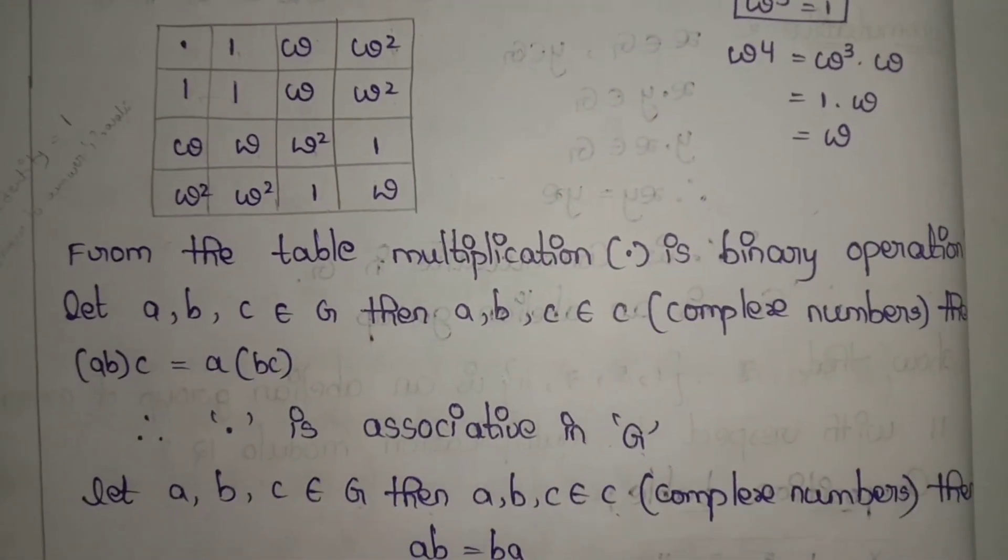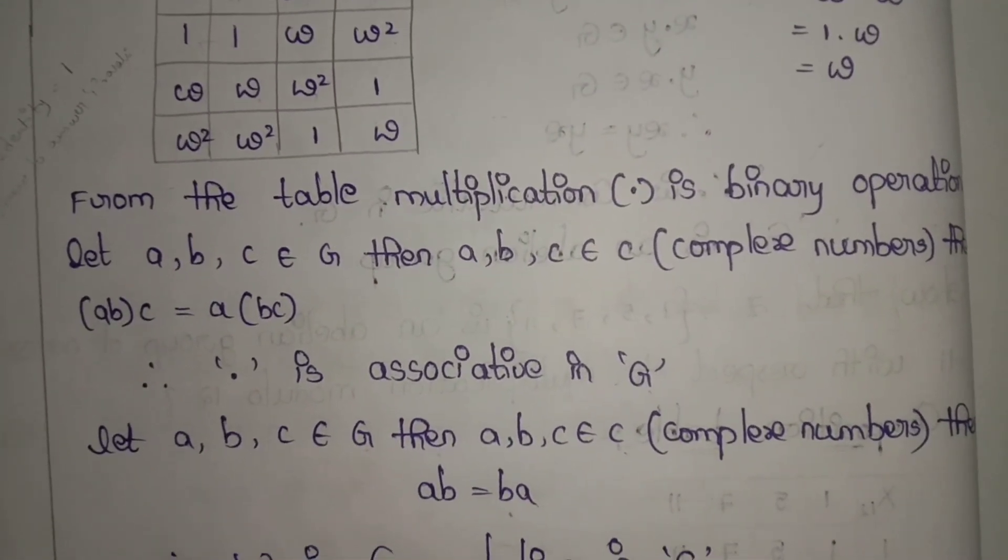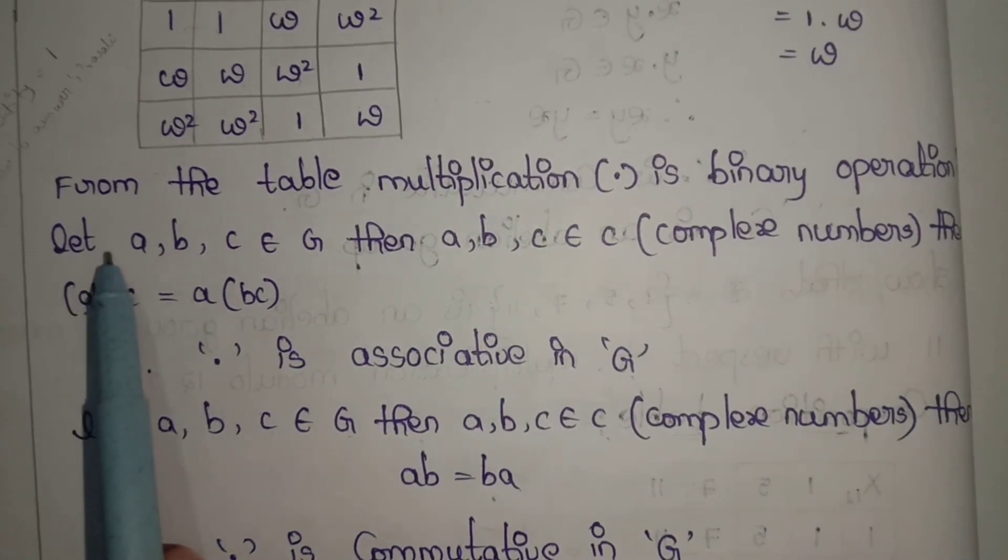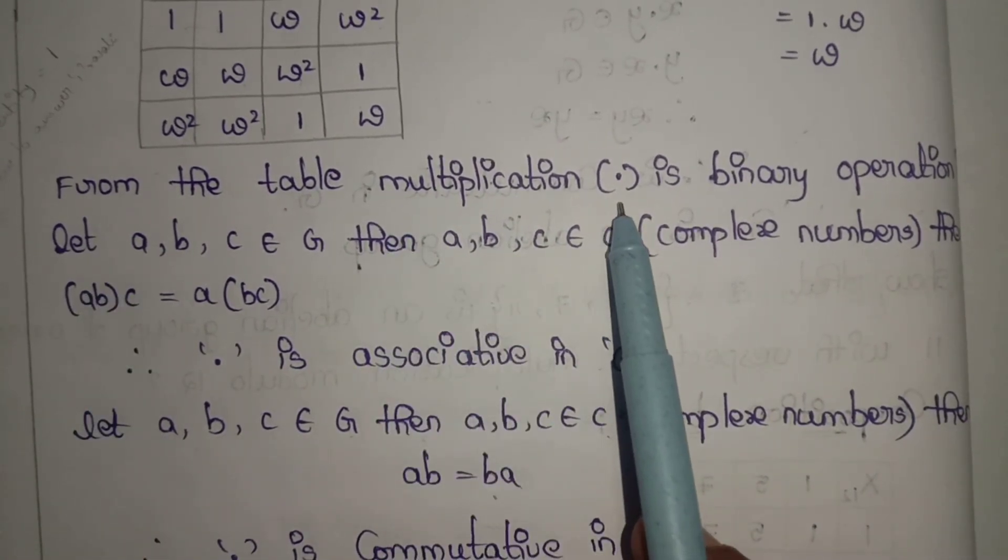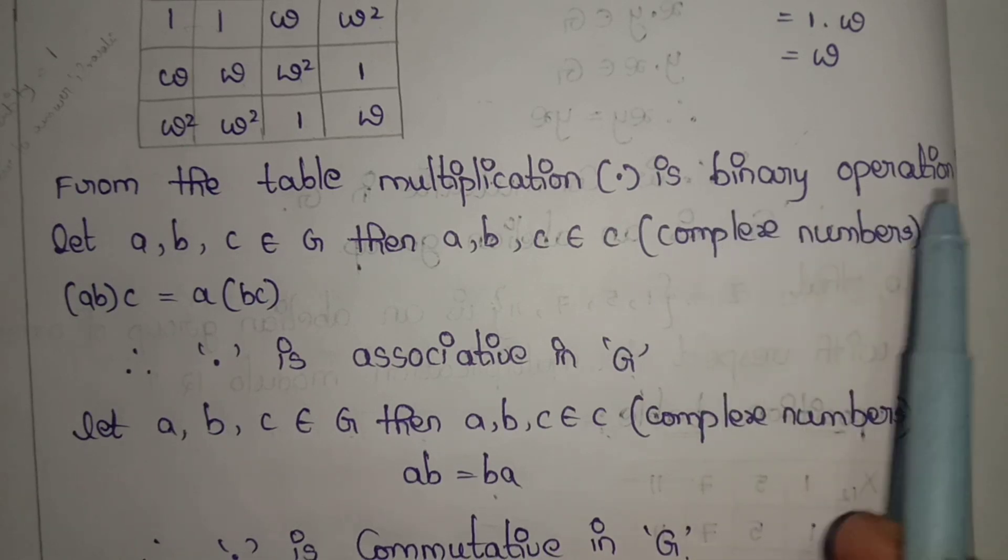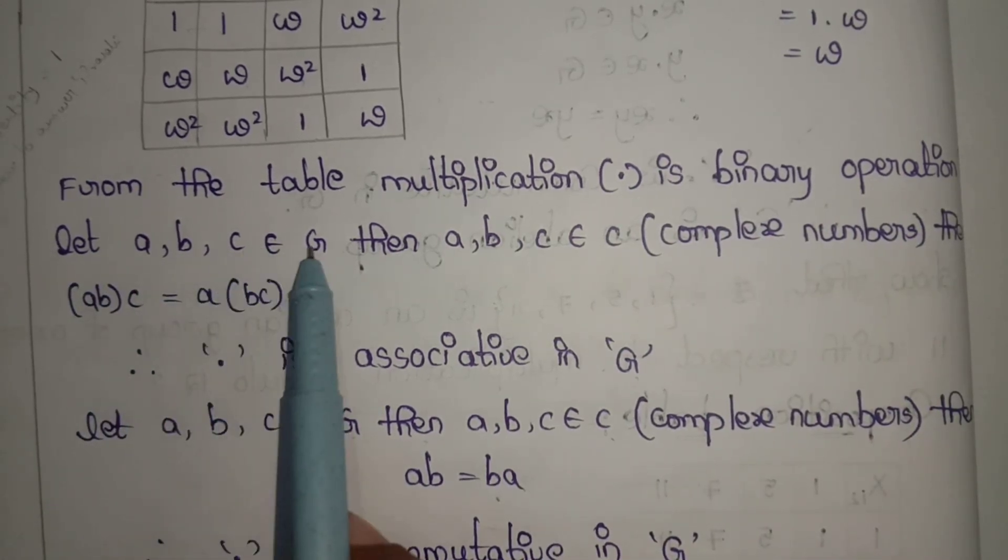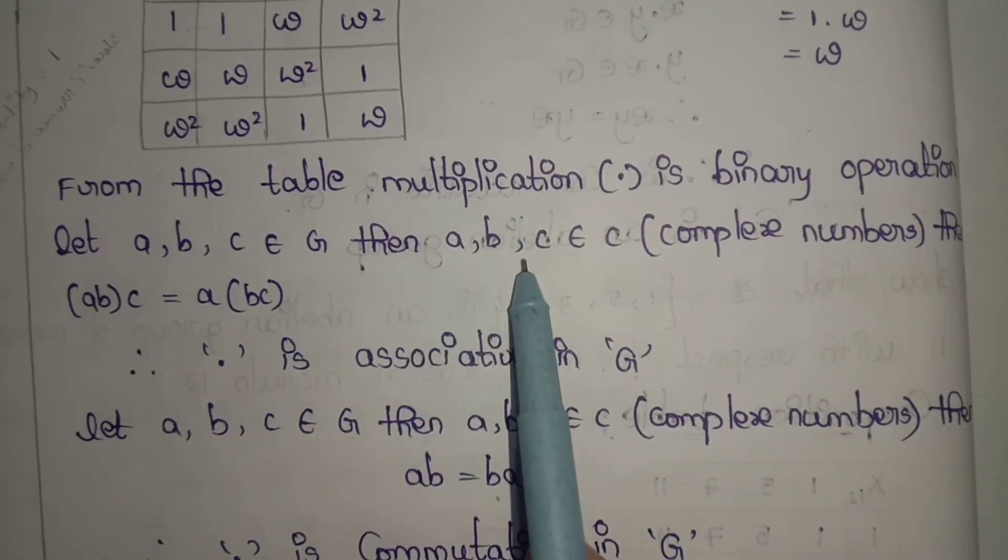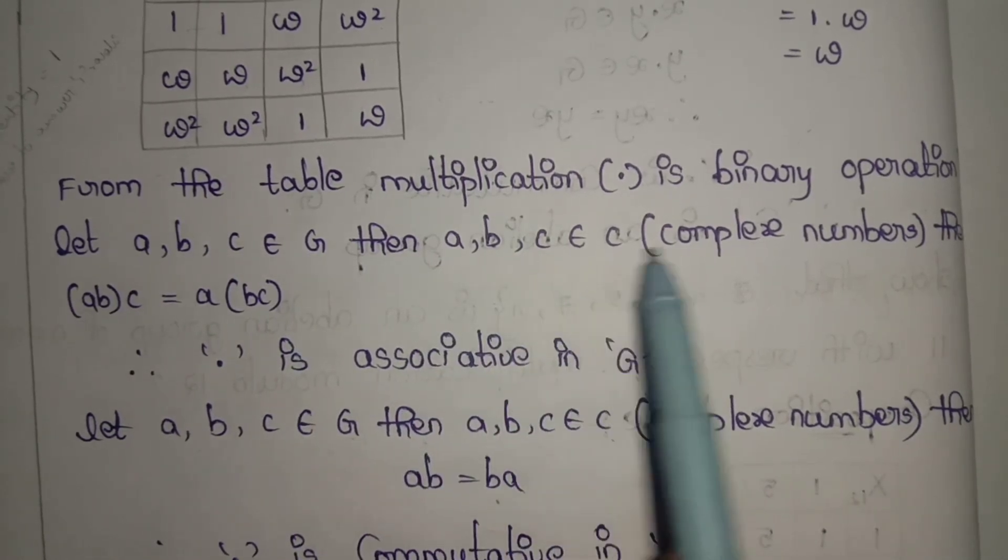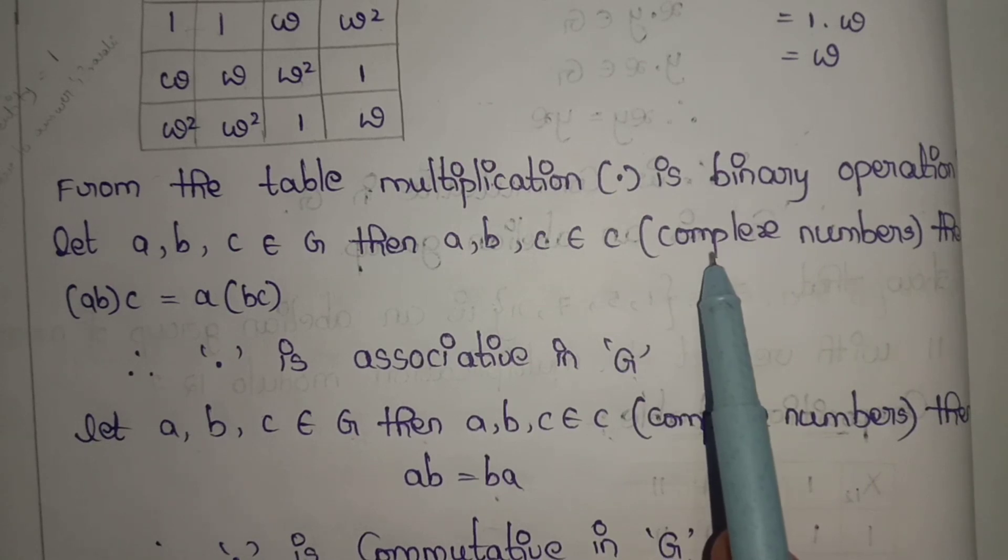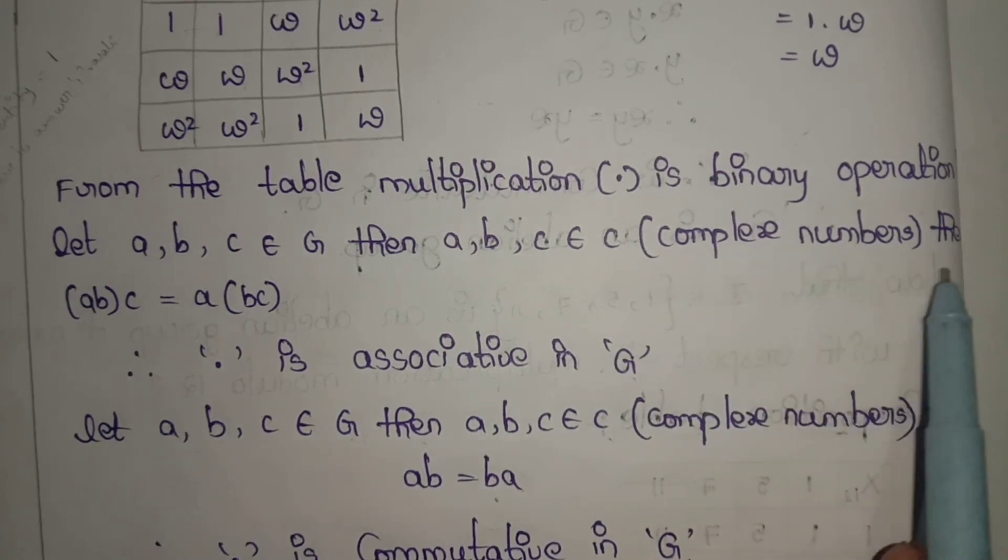From the table, multiplication dot is a binary operation. Let a, b, c belong to G, then a, b, c belong to C, the complex numbers.